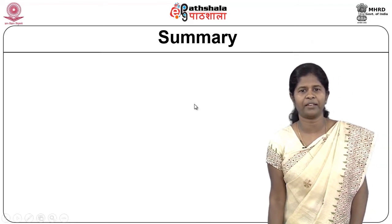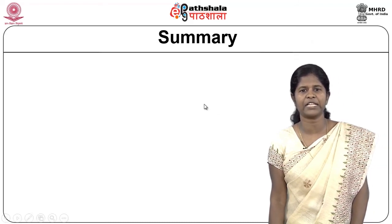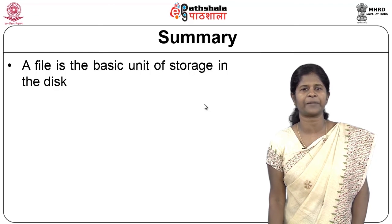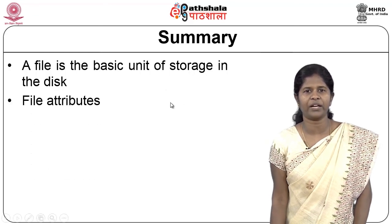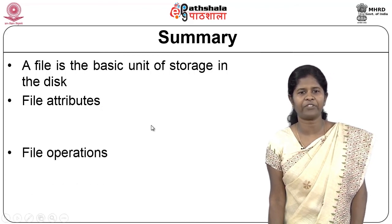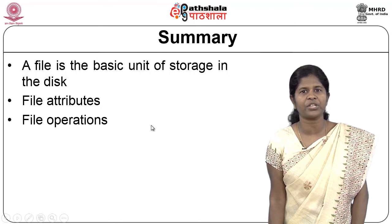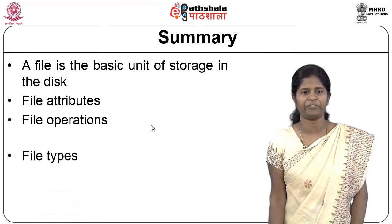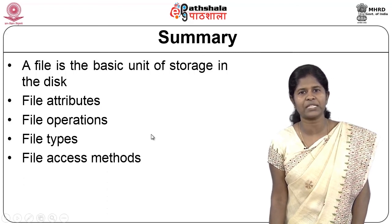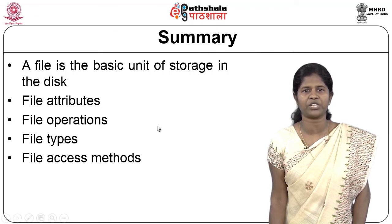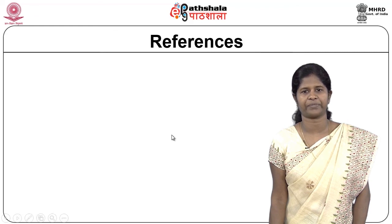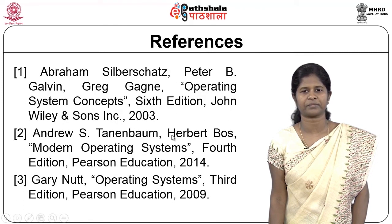In summary, a file is the basic unit of storage on disk, with the disk logically divided into disk blocks. A file can have many attributes, many operations can be performed on files, there are different types of files, and files can be accessed using sequential access, direct access, or indexed sequential access. Thank you.